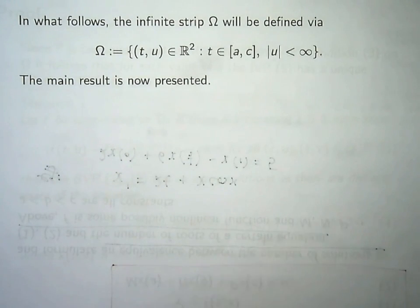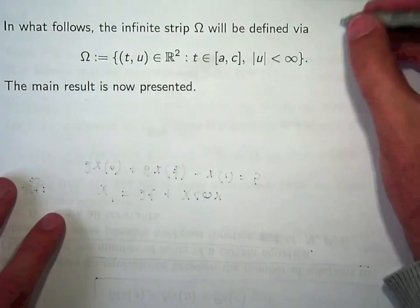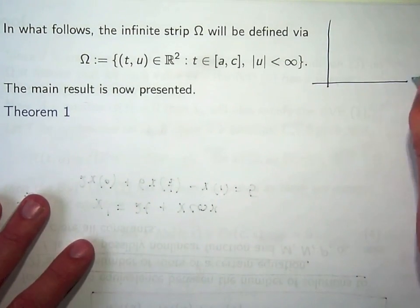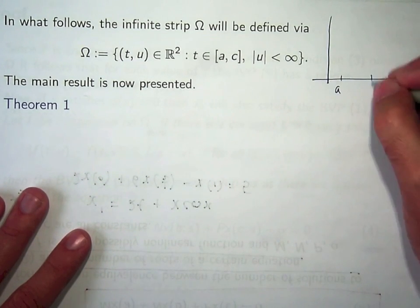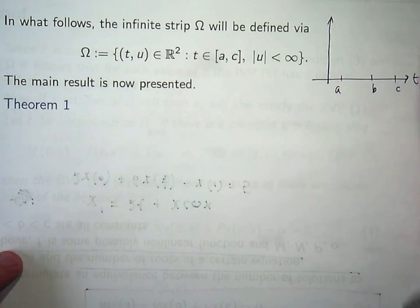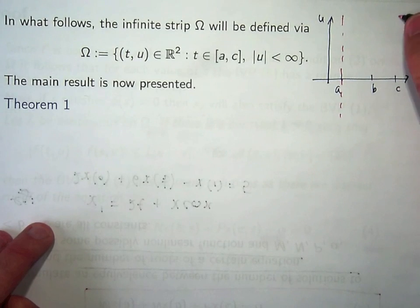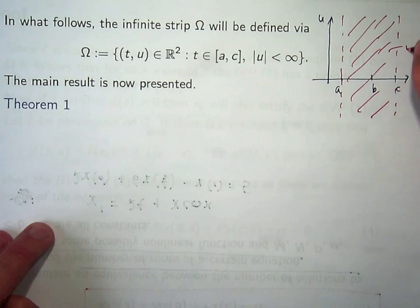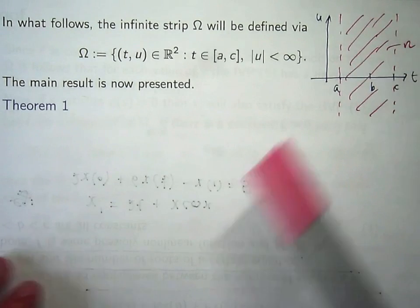So in what follows, I'm going to define an infinite strip omega to be this set here. So if I was to draw a little picture of omega, let's say a is here, c is here and b is somewhere in the middle. And this is the t-axis and this is the u-axis, then this sort of infinite strip is your omega. This is essentially going to be the domain of f in some sense.